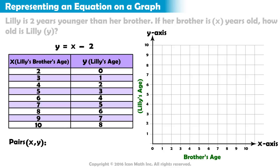The first ordered pair is two, zero. When her brother was two, Lily was zero. We move two places to the right, but we don't move the point up.